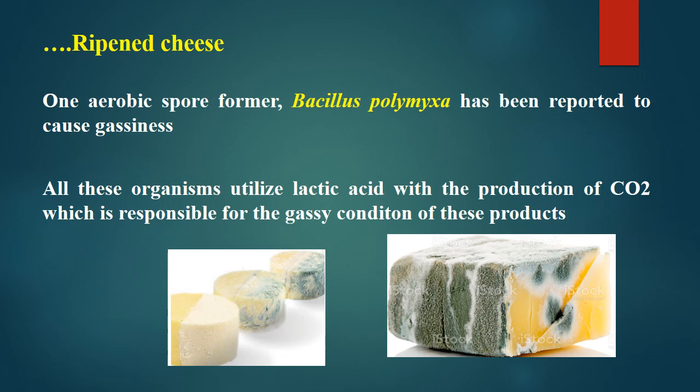Continuing about the spoilage of ripened cheese, one anaerobic spore-former, Bacillus polymyxa, has been reported to cause gassiness. This is a spore-forming bacterium. All these organisms utilize lactic acid with the production of carbon dioxide, which is responsible for the gassy condition of the cheese.